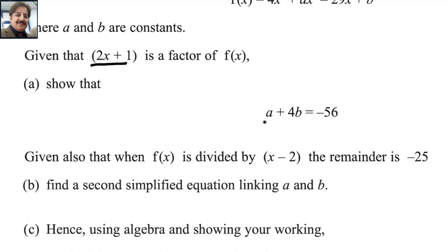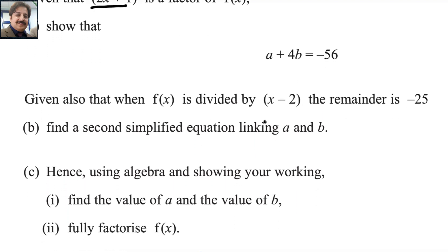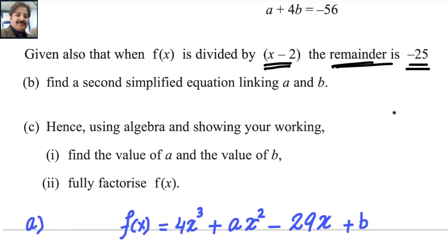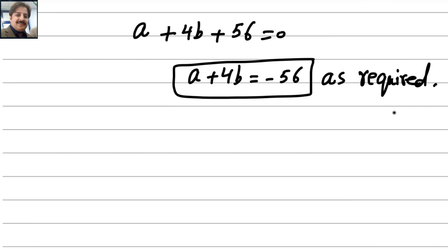For the next part: given that when f of x is divided by x minus 2, the remainder is negative 25. We set x minus 2 equals 0, so x equals 2. We substitute x equals 2 into the same equation and use the remainder value of negative 25.